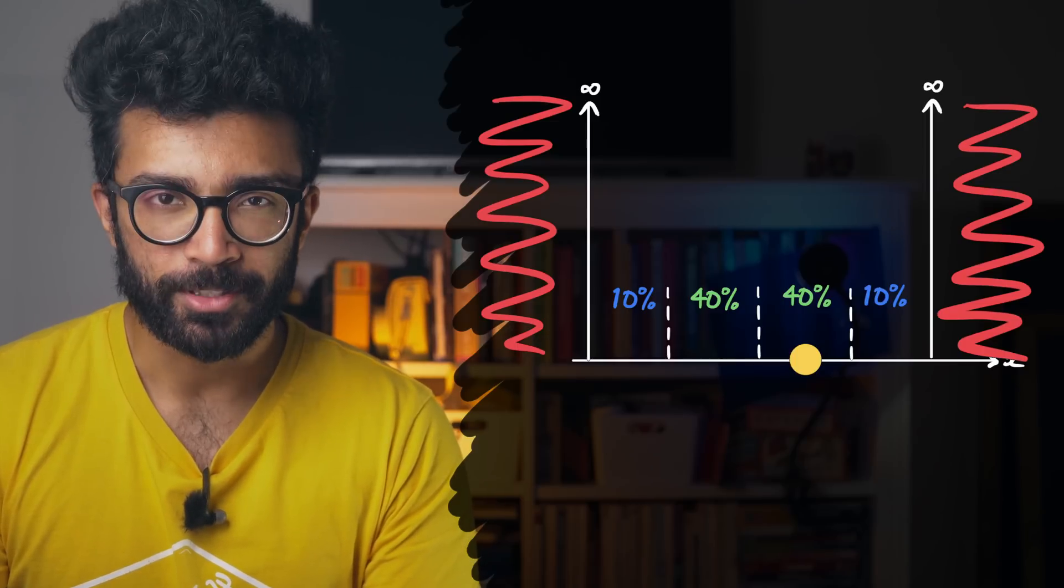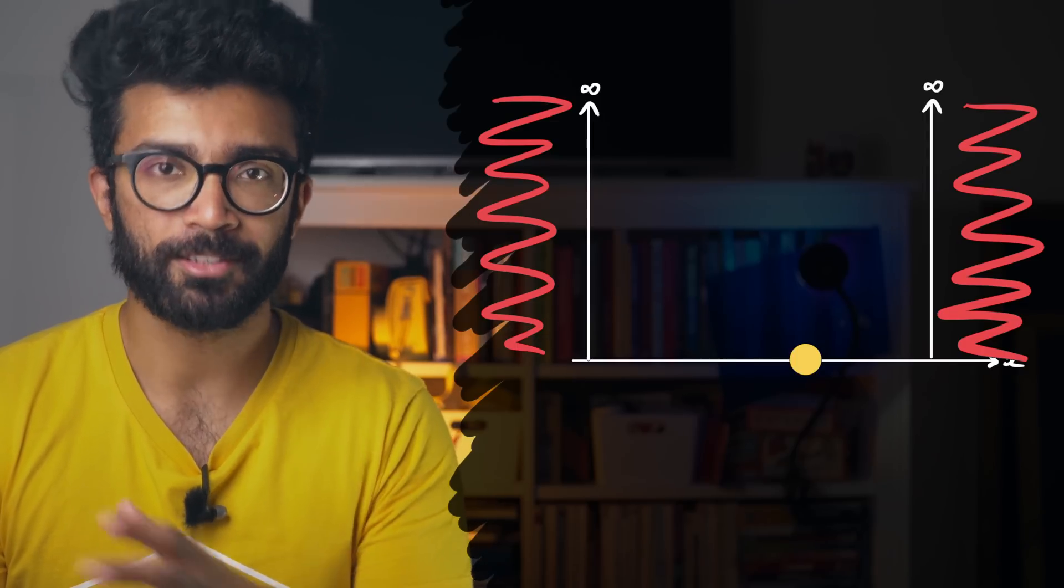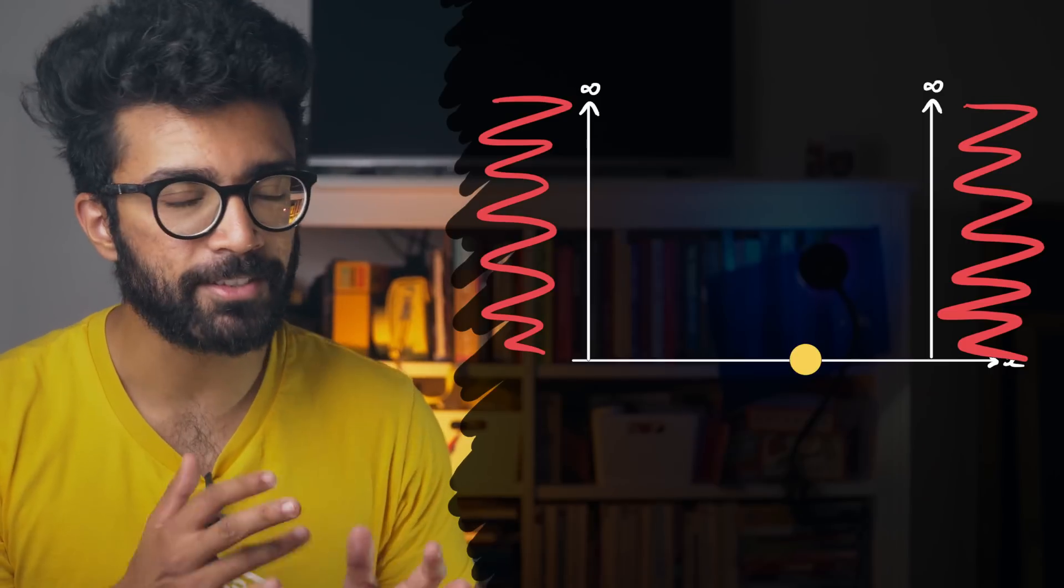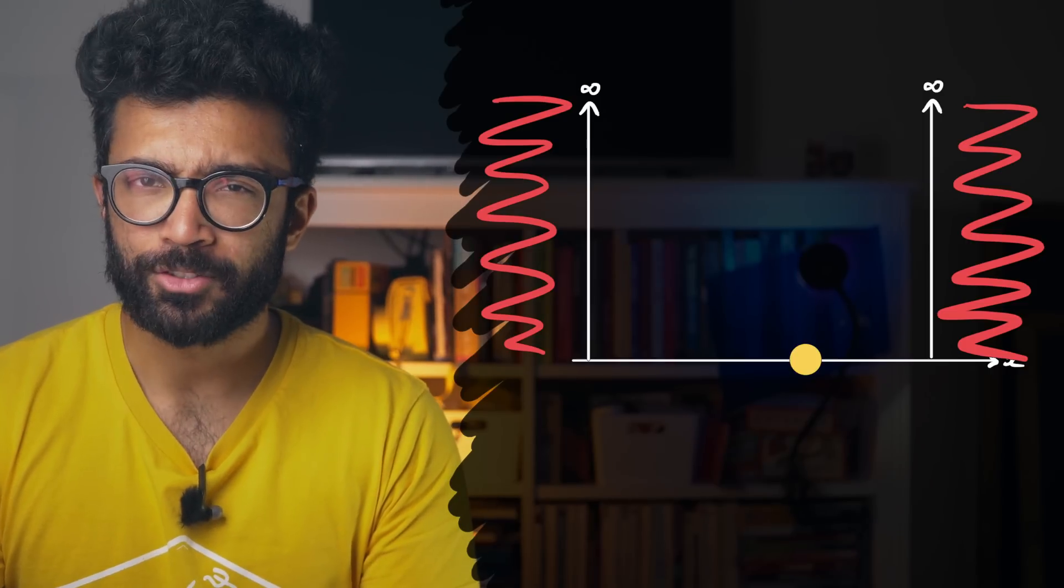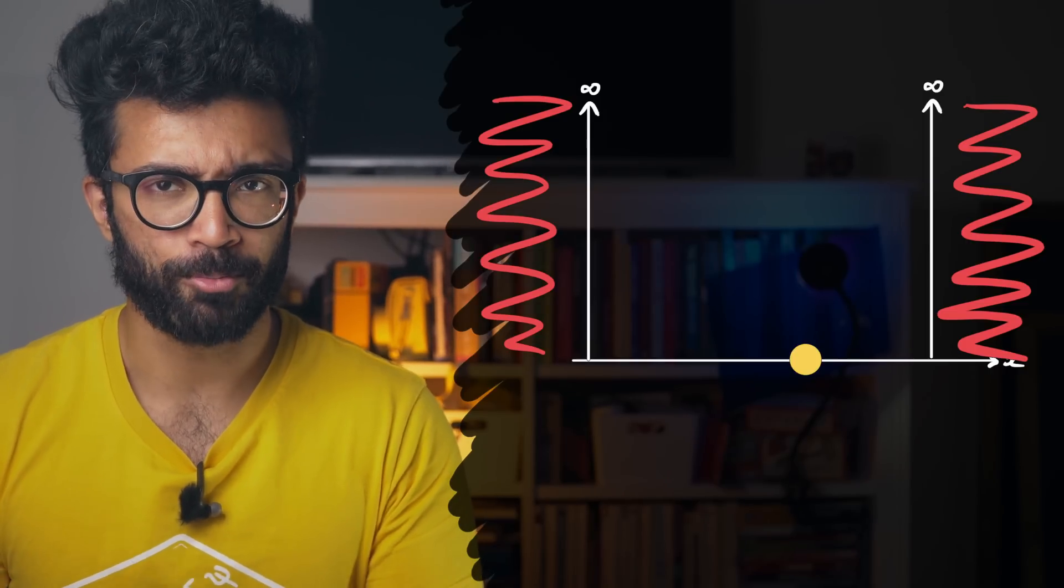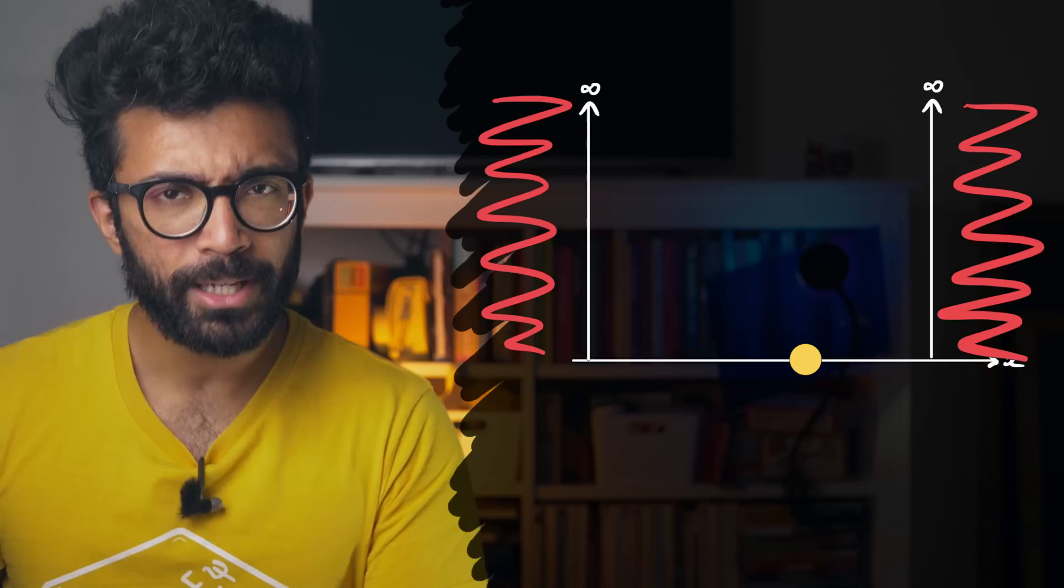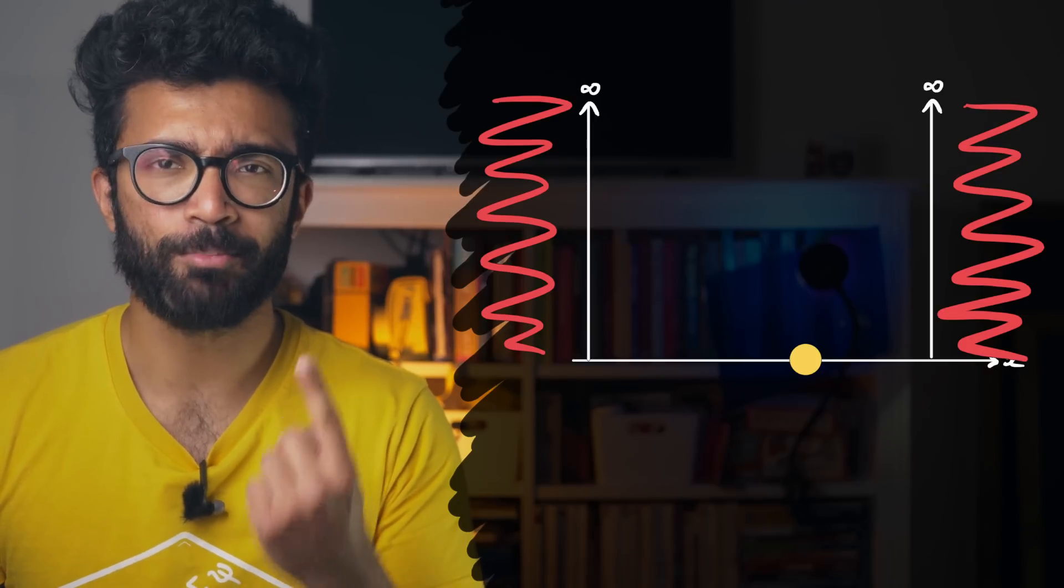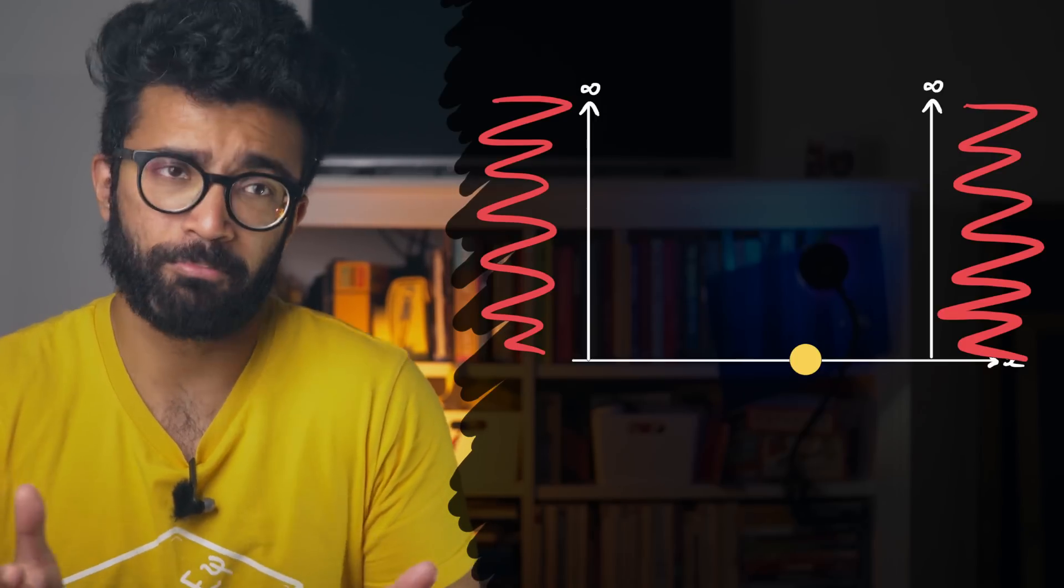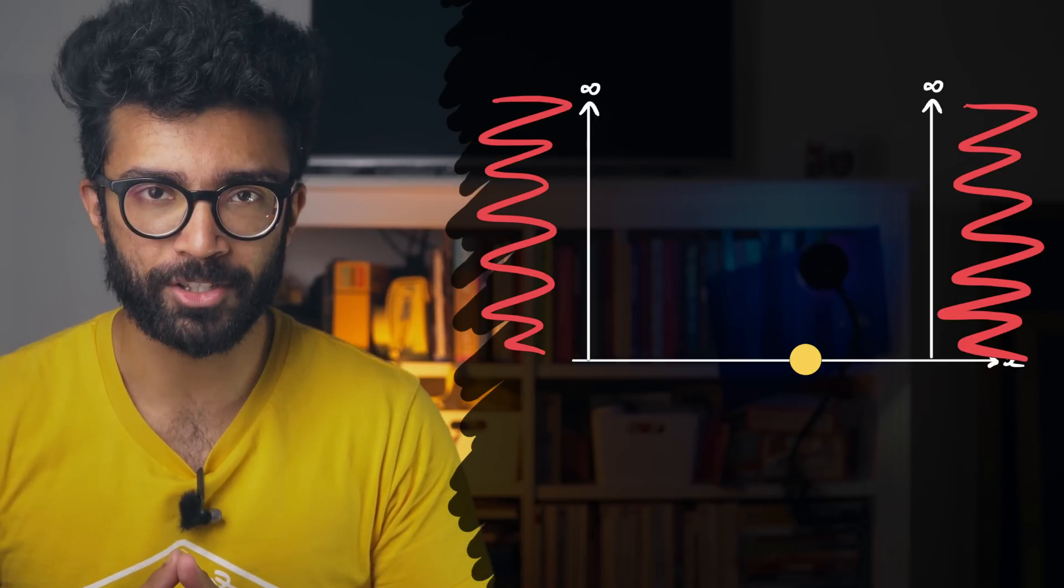Now, once we make the measurement, we know where the particle is, at least at that instant in time. So we can ask the question, what was the point of all the probabilities? They have no real meaning when we're making one single measurement, because the particle could basically be found anywhere in this region.